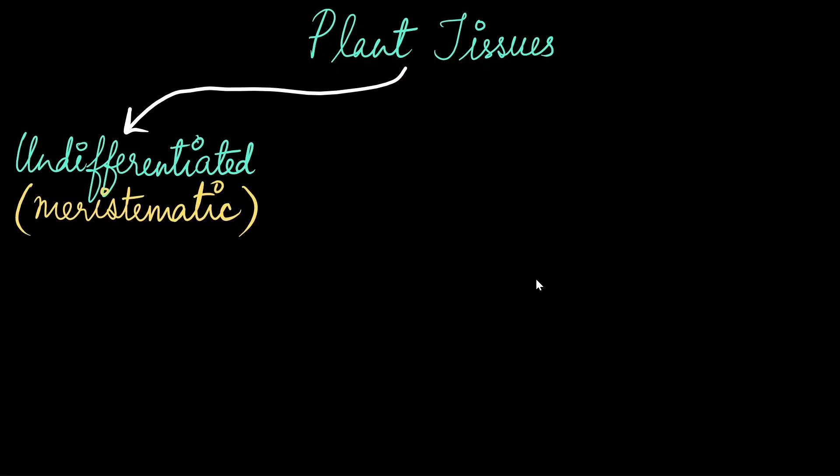Let's start with how plant tissue systems are categorized. We have the undifferentiated tissue, you might know them as meristematic tissue. These are usually stem cells. When a plant develops, meristematic tissue gives rise to distinct layers.